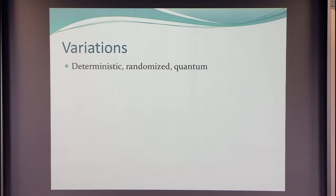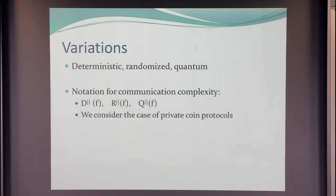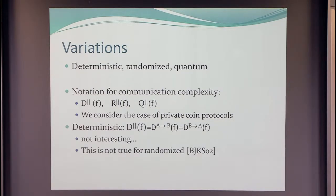Importantly, this is a communication model where there's an actual difference between public and private coin randomness, which we don't usually have. Variations of this can be deterministic, randomized, or quantum, and we can use this notation: deterministic SMP complexity, randomized, quantum. We will only consider private coin protocols here. The deterministic model is actually not interesting — it's exactly the sum of the two one-way complexities, so we don't really need to consider it.